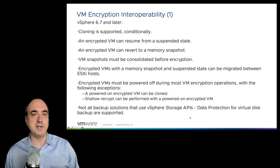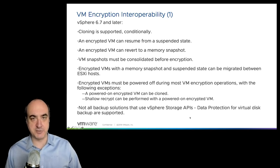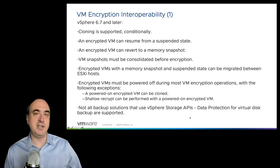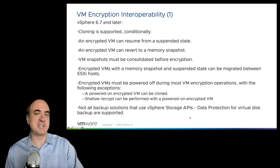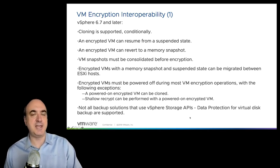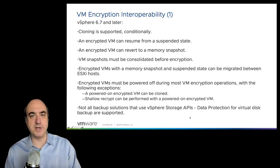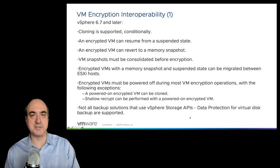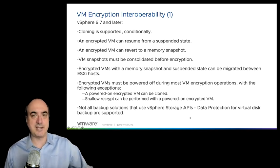Snapshots must be consolidated before encryption. If you're going to encrypt a VM, the virtual disk needs to be copied into a new encrypted form. So if a VM already has snapshots, it can't go through encrypting each of the different delta files. What it will need to do is have all the deltas consolidated into a single virtual disk, and then you can take that VM and make it into an encrypted VM.